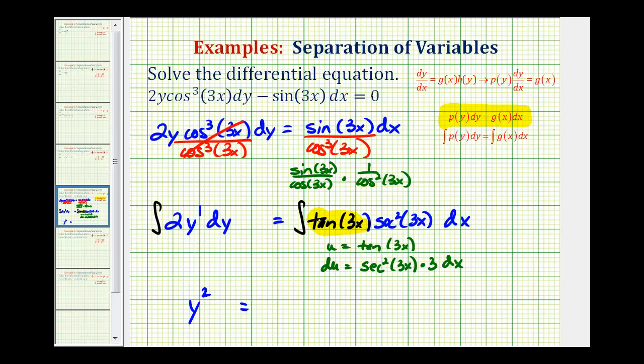So right now, tangent 3x is equal to u, leaving us with secant squared 3x dx in our integral. But notice right now it's not a perfect match because of this 3 here. So let's go ahead and divide both sides by 3. So secant squared 3x dx is actually equal to 1 third du.